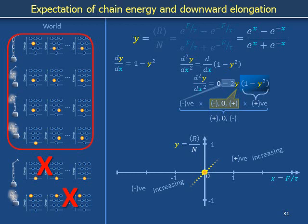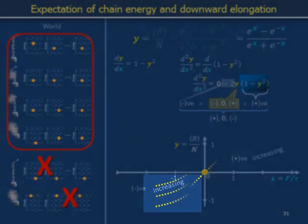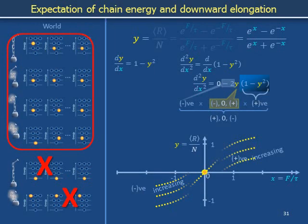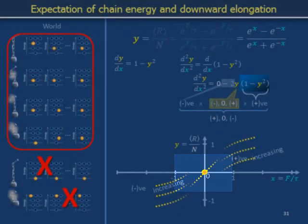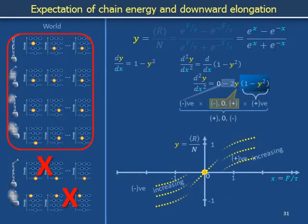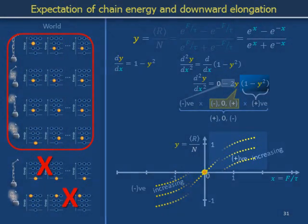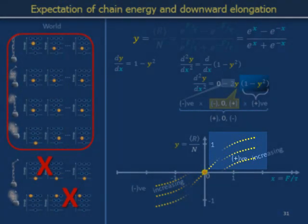Positive values of the second derivative when x is less than 0 correspond to upward curvature in this region. The value of the second derivative is 0 at the origin, meaning that the plot of y on x momentarily has no curvature here. And negative values of the second derivative for x greater than 0 correspond to downward curvature in that region.